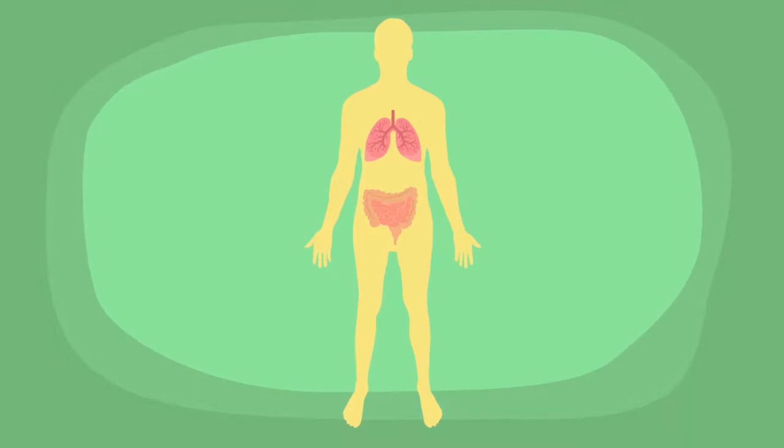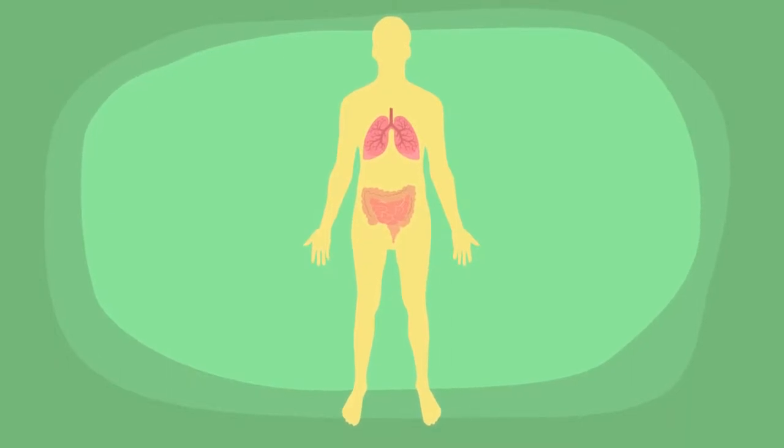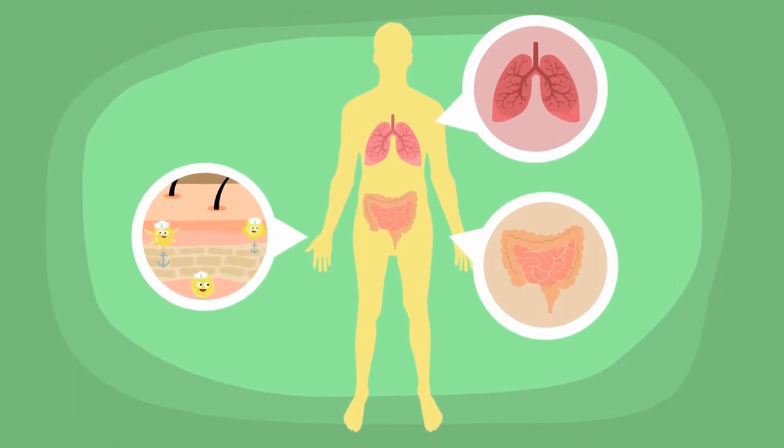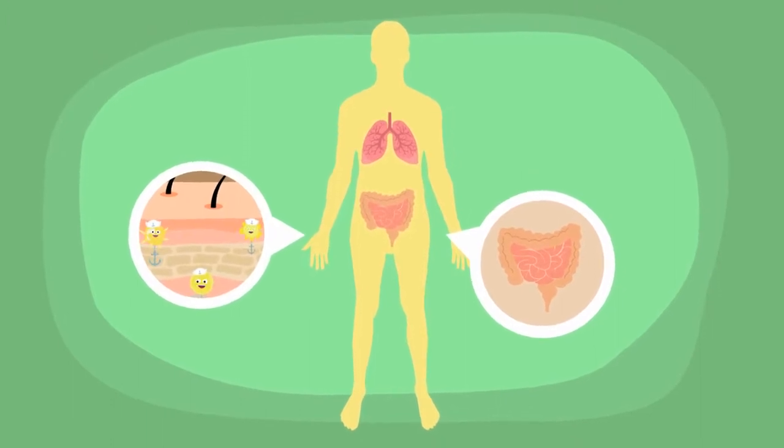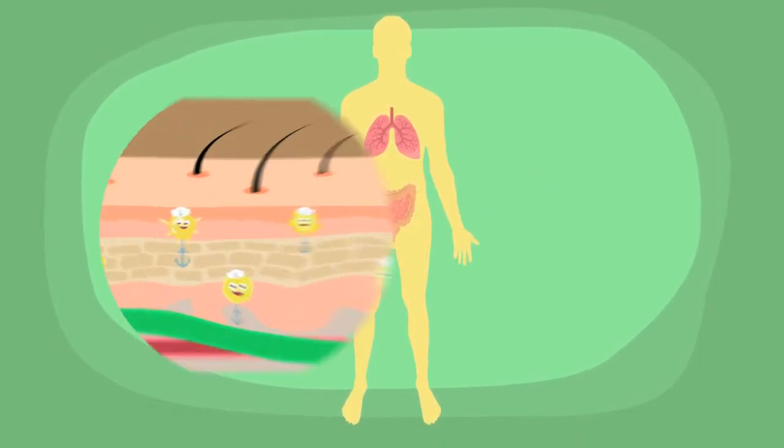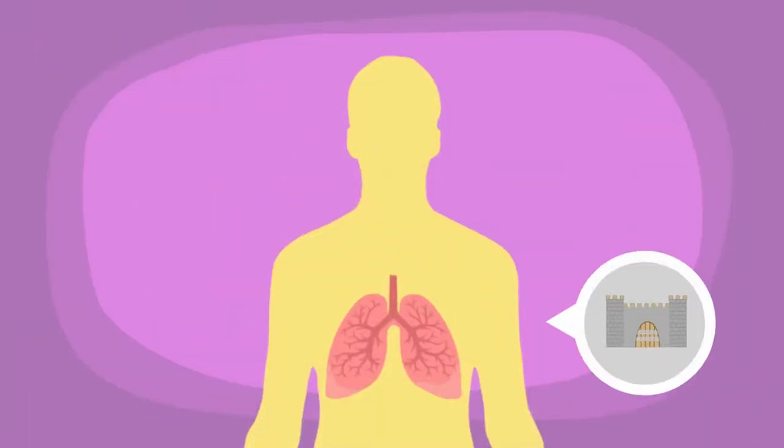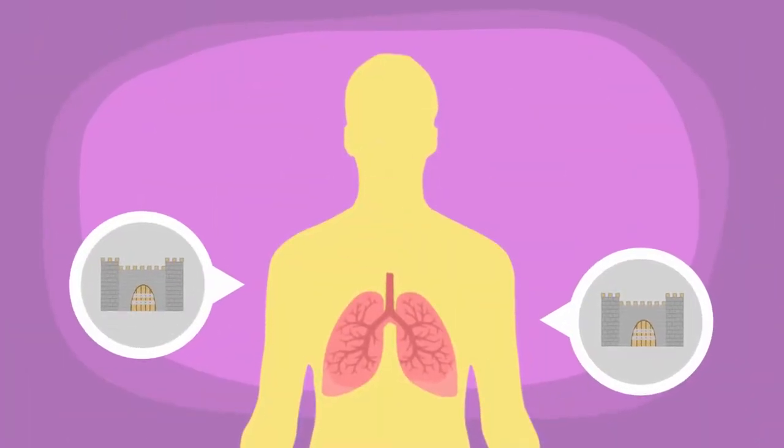Tissues at the interface with the outside environment, such as lungs, guts, and skin, need more than circulating cells to efficiently monitor danger. Many specialized innate and adaptive-like immune cells reside permanently in these tissues like soldiers in a fort and self-renew as needed.